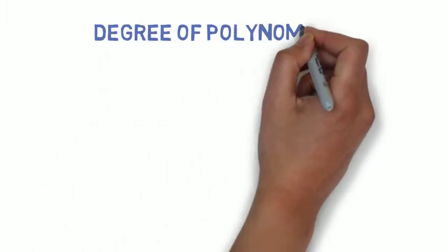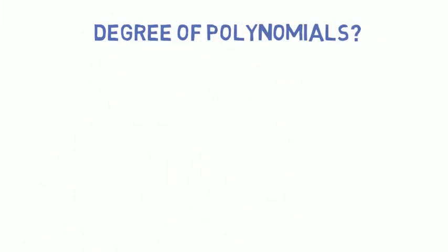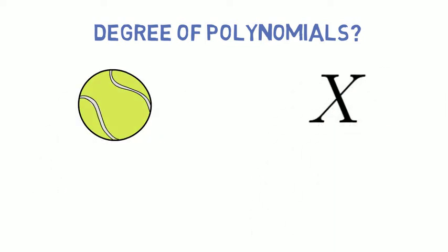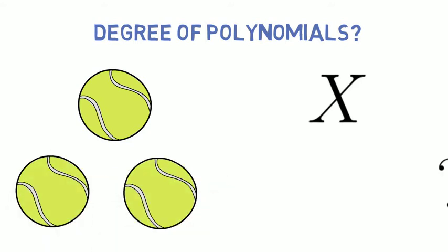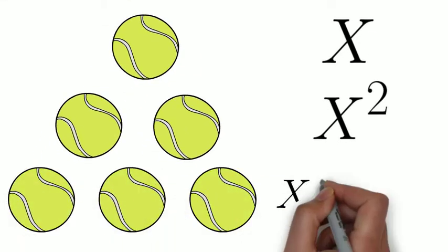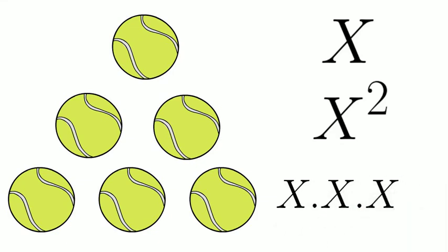Before we move on to understand what is the degree of polynomial, can you tell me if one ball can be represented by one x? How we can represent two balls? Correct, it can be represented by two times x or x square. Similarly, three balls means three such variables x and so on. It means the number of x represents the number of balls. Similarly, we need to know the degree of polynomials, what it signifies in the real world. Let's understand this with a few examples.